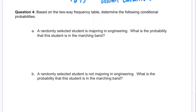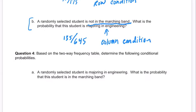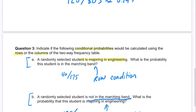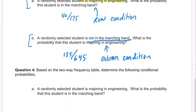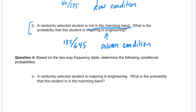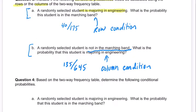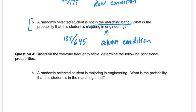Based on the two-way frequency table, determine the following conditional probabilities. A random student is majoring in engineering — what is the probability that they are in marching band? I think we have this answer already. That's 40 out of 175, which we had before. So it's a repeat question.